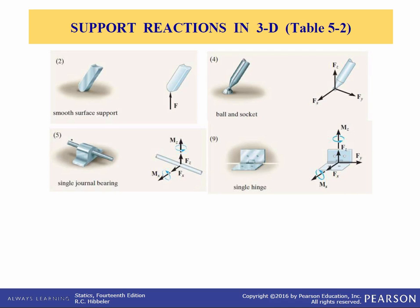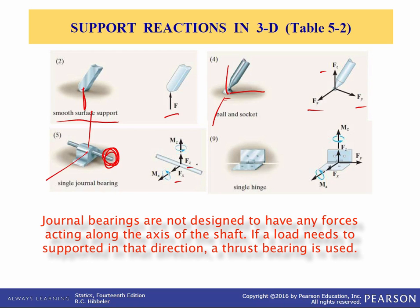Here we have four examples of support reactions. On a smooth surface, it prevents motion in that direction so the force is also in that direction. A ball and socket, like an arm joint, can't support any moments but can prevent translation in any of the three dimensions, so it has reaction forces FX, FY, and FZ. A single journal bearing means it can rotate freely about that axis, prevents translation in two directions giving those two forces, and can support moments about the z-axis and the x-axis.